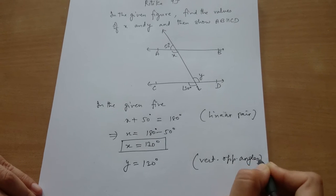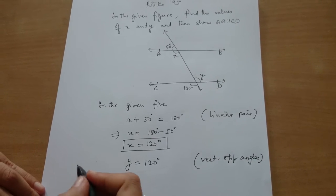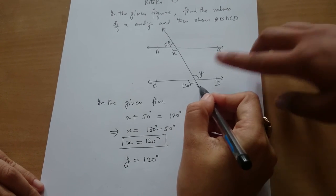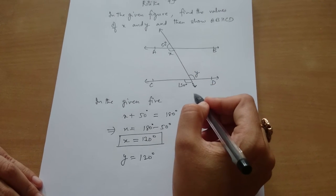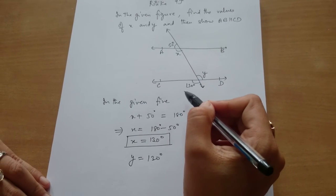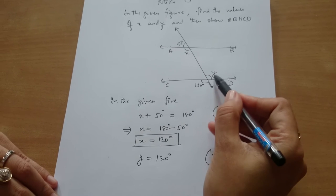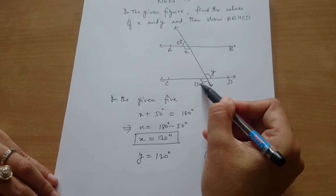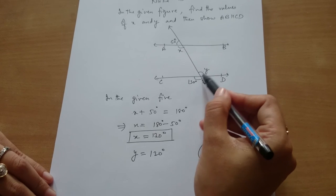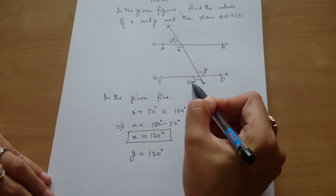What are vertically opposite angles? When two lines intersect, two pairs of angles are formed. When the two angles are opposite to each other, they form vertically opposite angles.